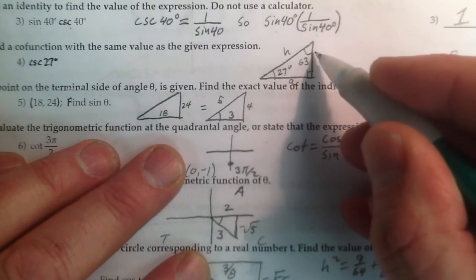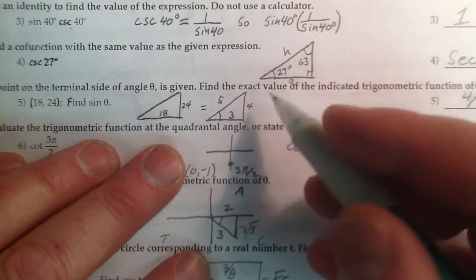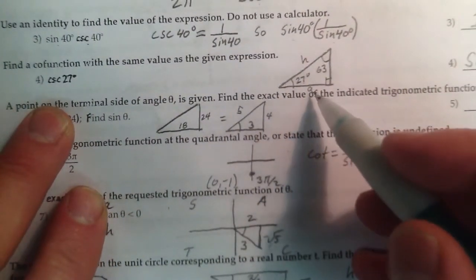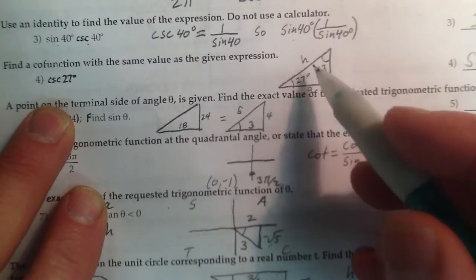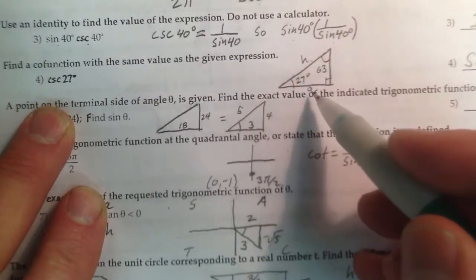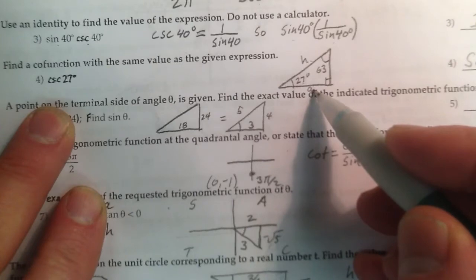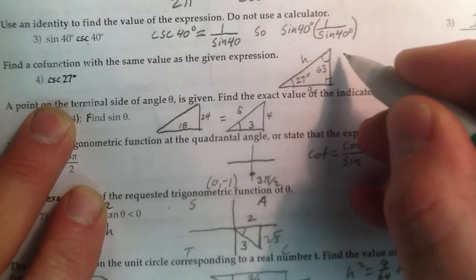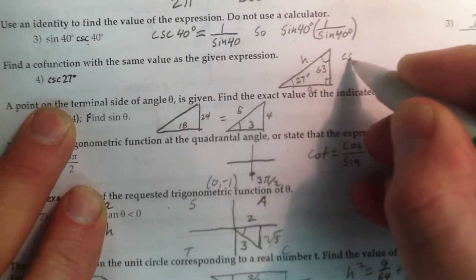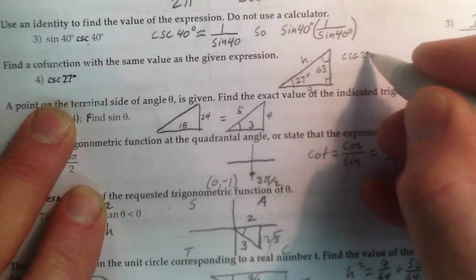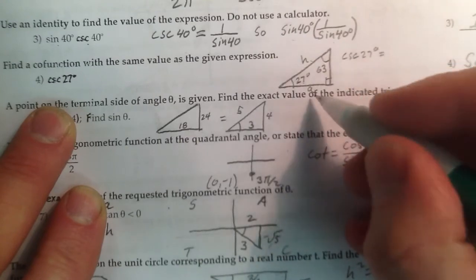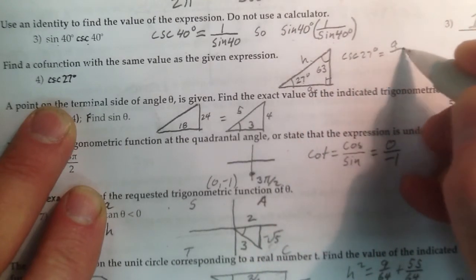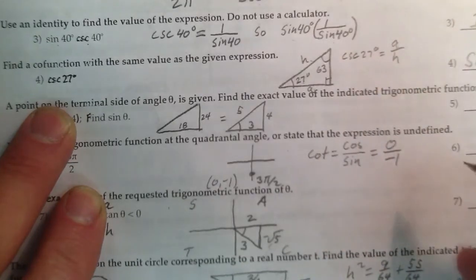So this is the cosecant. That is going to be hypotenuse divided by adjacent. So in this case here, cosecant of 27 degrees in this triangle is going to be equal to this adjacent divided by hypotenuse.